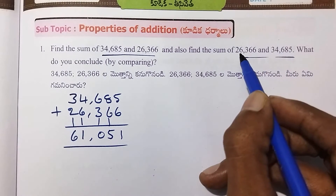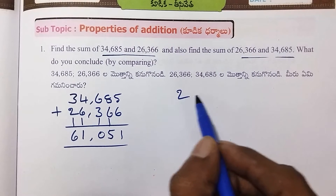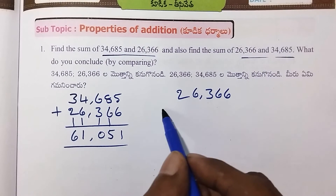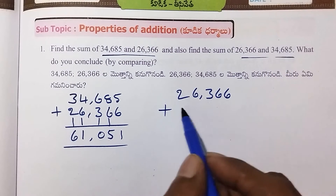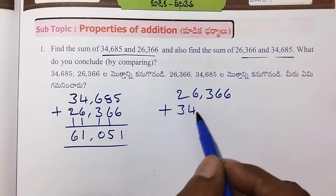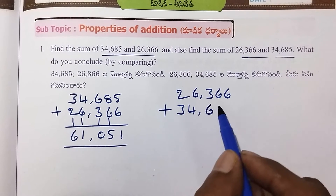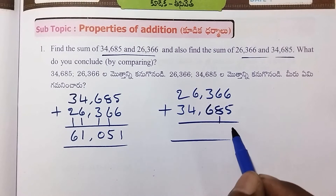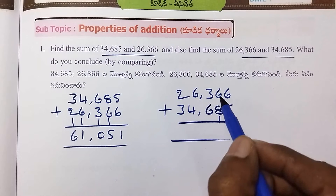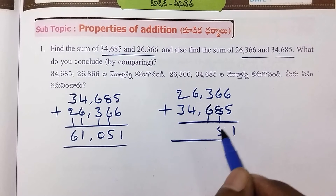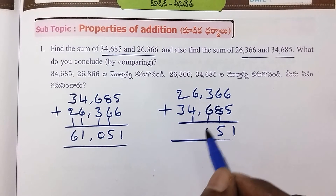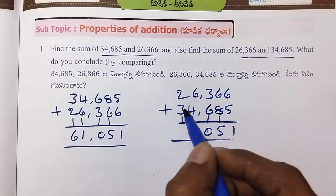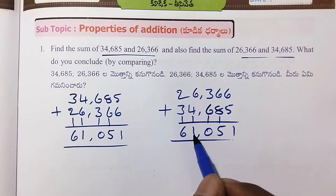Now, 26,366 plus 34,685. So, 6 plus 5 is 11. 8 plus 1 is 9. 9 plus 6 is 15. 6 plus 3 is 9, plus 1 is 10. 6 plus 5 is 11. 6 plus 4 is 10, plus 1 is 11. 2 plus 3 is 5. The answer is equal to 61,051.